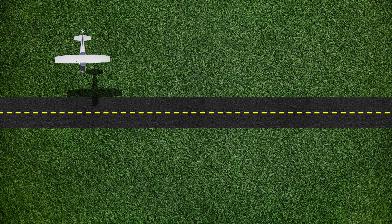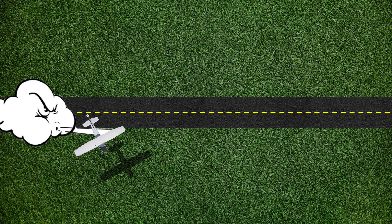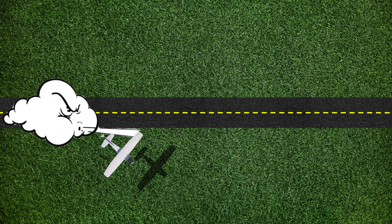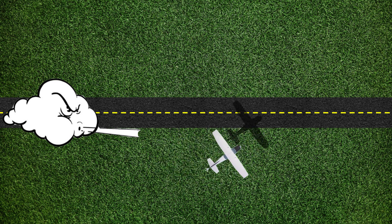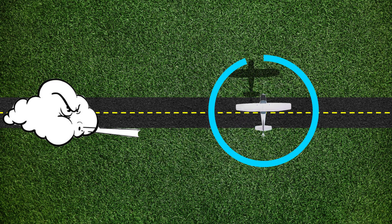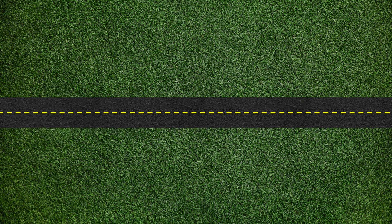If a pilot does a 180-degree turn with a constant bank angle after crossing a straight ground reference line when there is a crosswind, the aircraft will be blown parallel to the reference line and complete their 180-degree turn further down the reference line than desired, increasing their turn's radius. The way a pilot can compensate for these undesired outcomes is to constantly adjust their bank angle based on their ground speed.